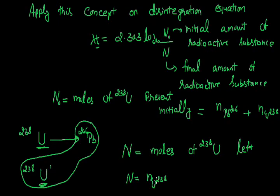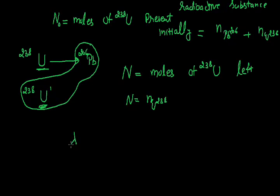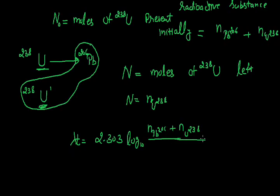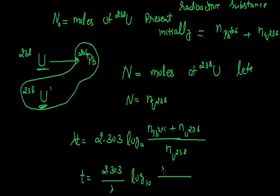By substituting these values into the disintegration equation, we get: λt = 2.303 × log base 10 [(moles of lead-206 + moles of uranium-238) / moles of uranium-238 remaining]. Therefore, t = (2.303 / λ) × log base 10 [(moles of lead-206 + moles of uranium-238) / moles of uranium-238].